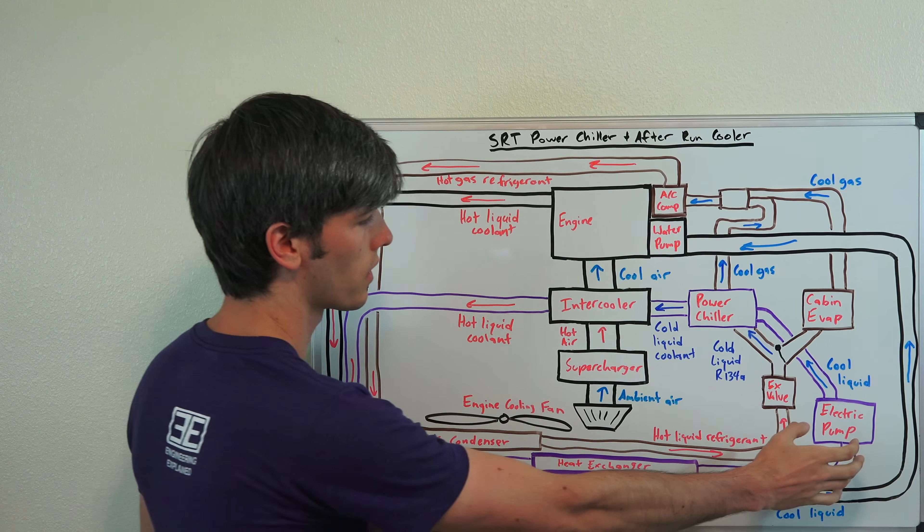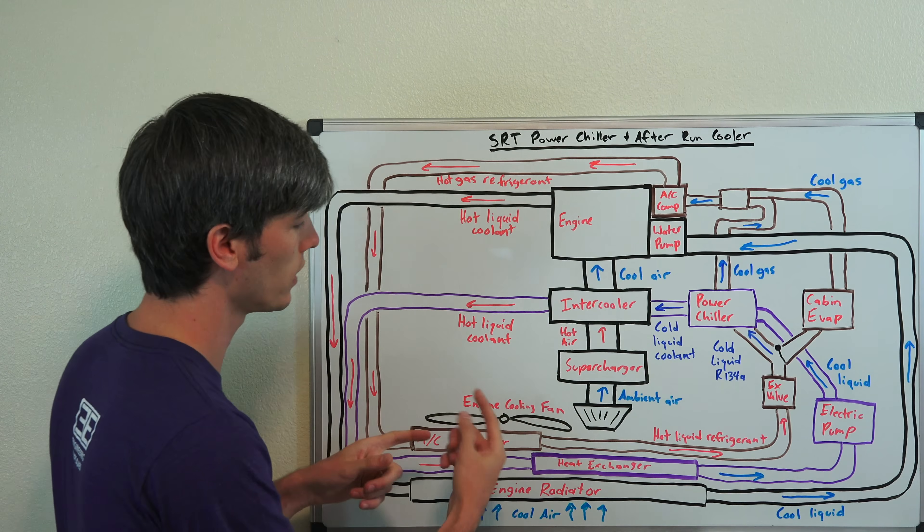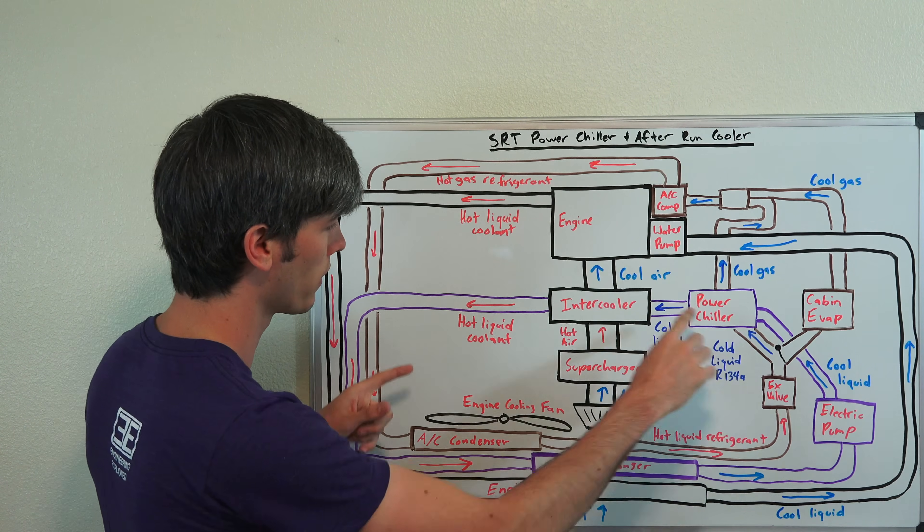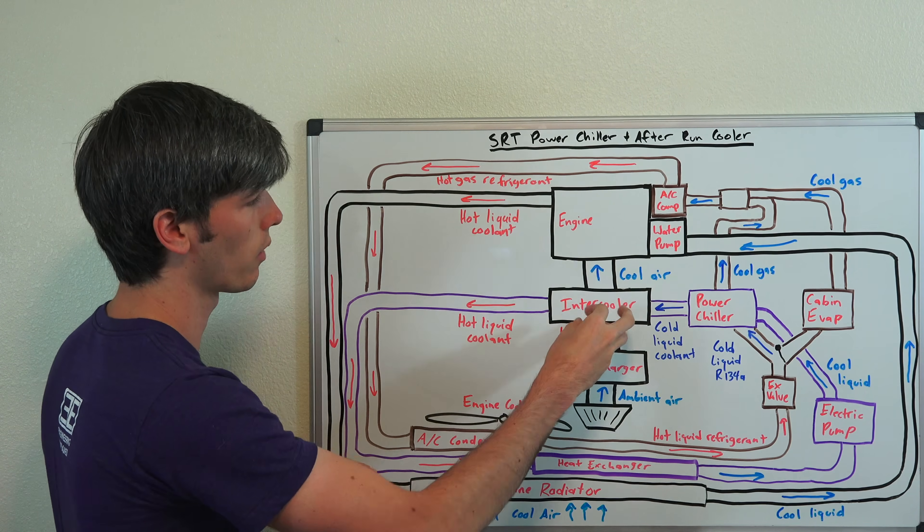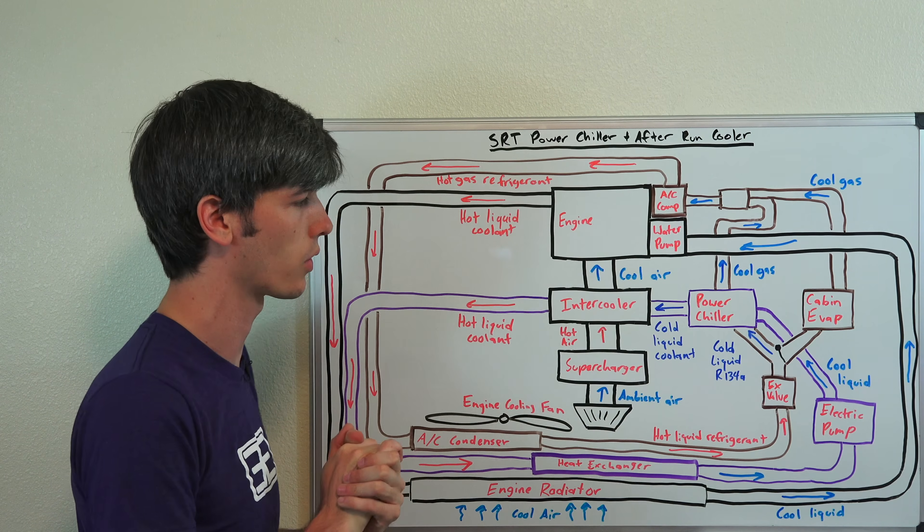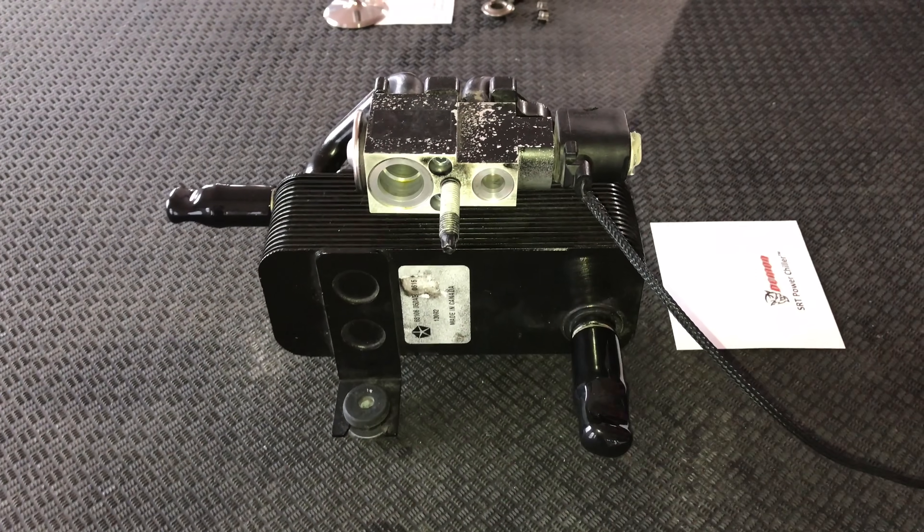this after run cooler, is because the pump is electric, and the fan is electric, you can continue to run that engine cooling fan, and the electric pump, and you'll continue to run this cooler temp circuit here for the intercooler, to make sure that when you do start back up, you're not going to have super hot intake air temperatures. So pretty neat that they do that, that's the after run cooler portion, and then the SRT power chiller,